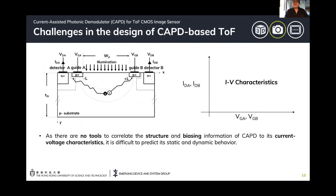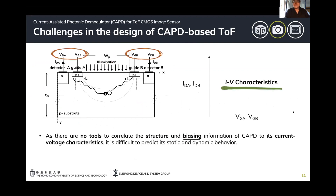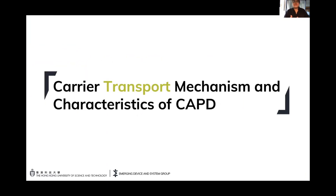The problem is that even though CAPD is being used for existing time-of-flight applications, its output characteristics are still difficult to predict. There is no model or tools to correlate its structure and biasing information to its IV characteristics, making it difficult to predict both its static and dynamic behavior. With this problem, we developed the first compact model for CAPD.